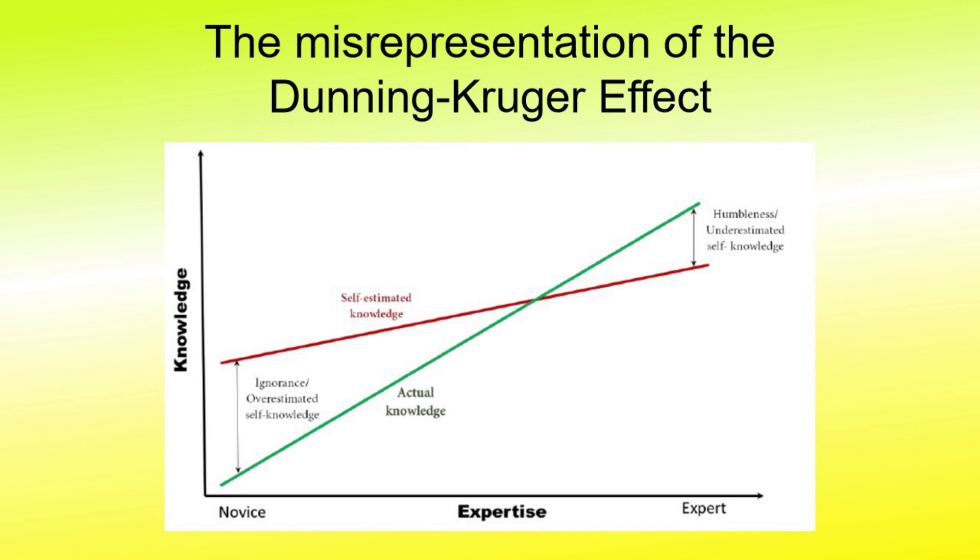This is a better representation of the effect as presented in the paper. Note that there is a continual increase in confidence from beginner to expert and not the sharp peak depicted in the other graph. It is just more gradual than the line of actual knowledge. This graph gives a completely different impression than the other one does and it has less propaganda value.